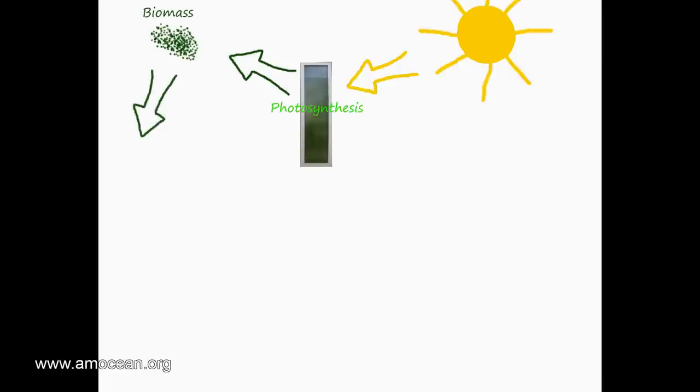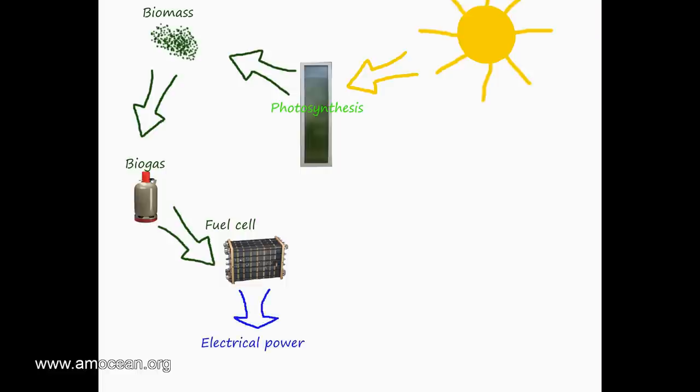The biomass is fed into a biomass reactor in order to produce biogas. The biogas in turn is burned in a fuel cell in order to produce electrical energy which provides electricity to the house.